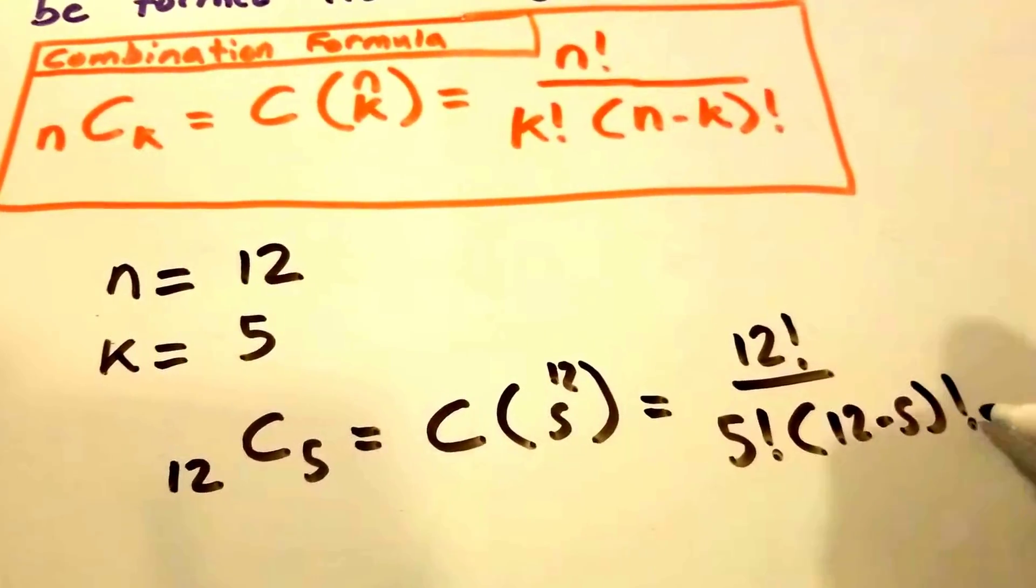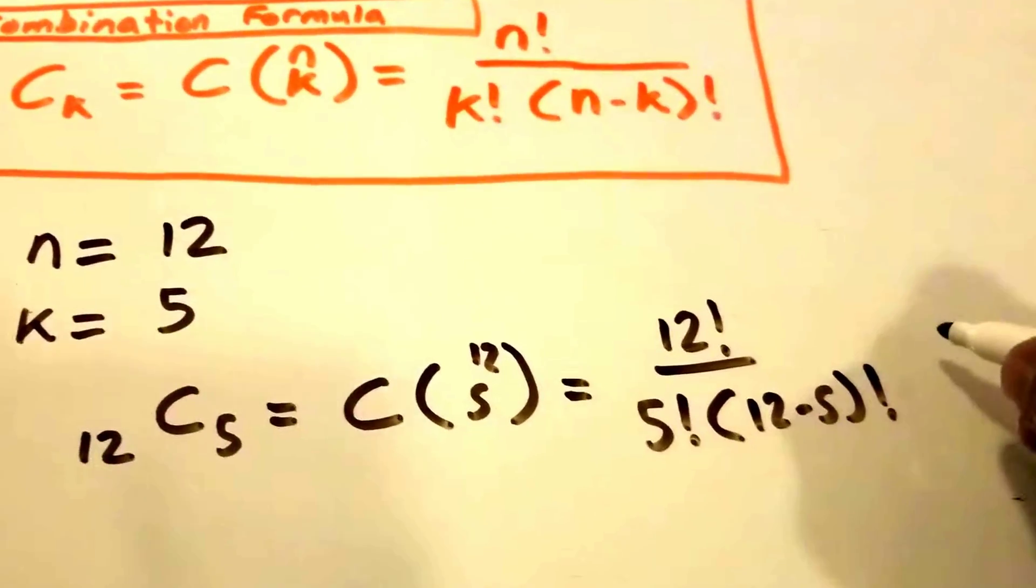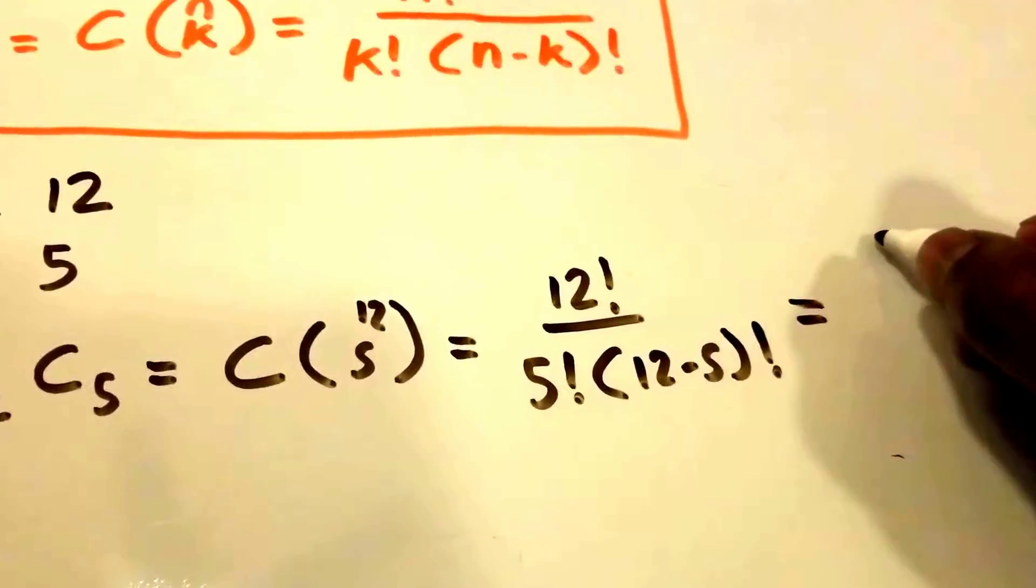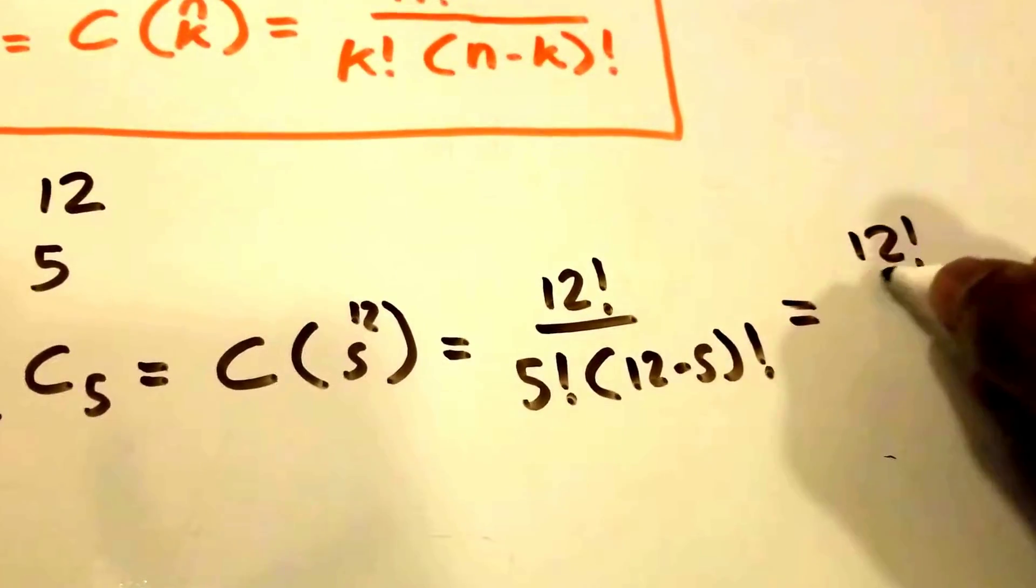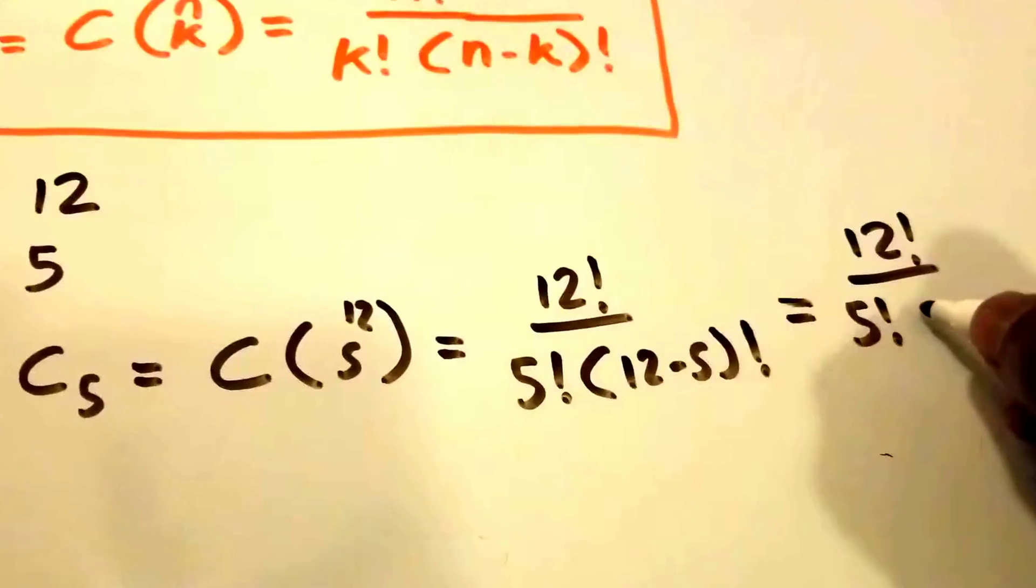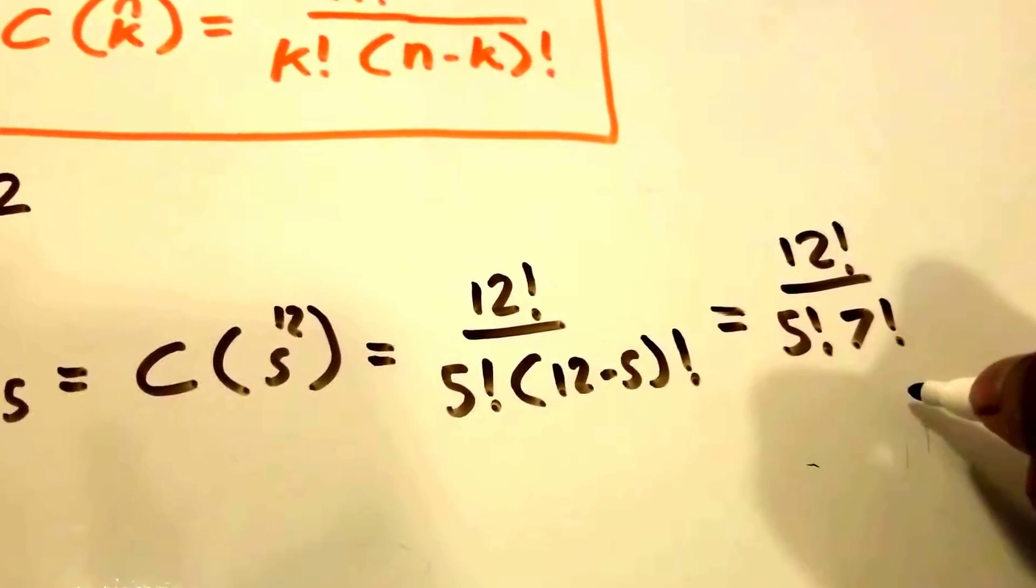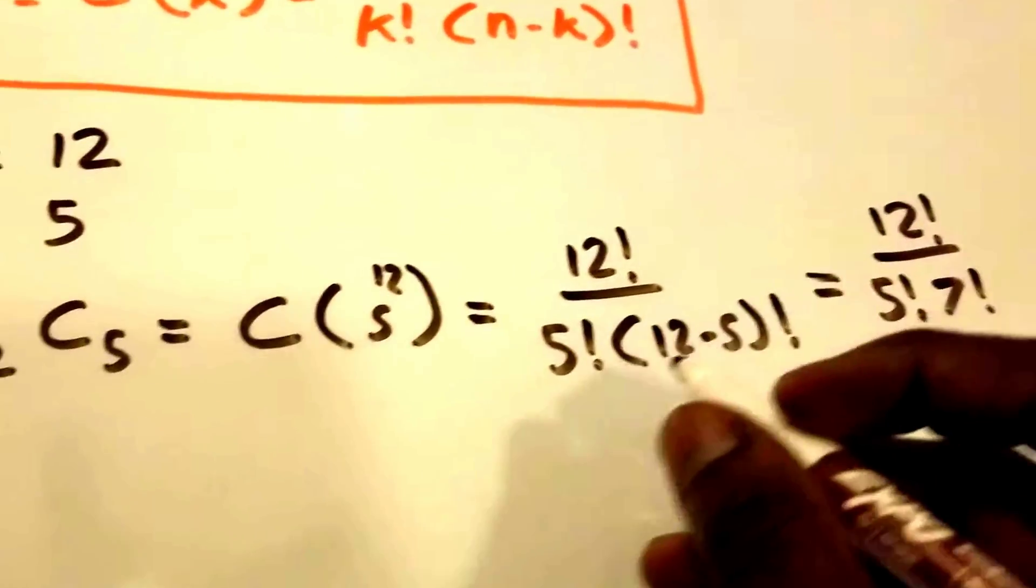This is equal to 12 factorial divided by 5 factorial times 7 factorial. We're going to go down here now and rewrite our equation.